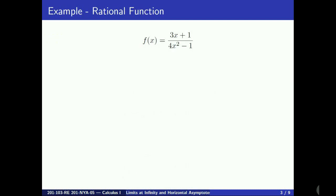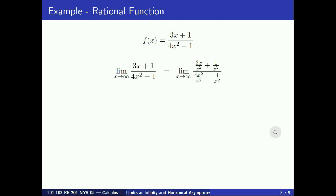As an example, take f of x equals 3x plus 1 over 4x squared minus 1. It is a rational function, that is a ratio of polynomials. As x goes to infinity, we evaluate limits of rational functions by dividing each term by the highest power found in the denominator. Here this power is x squared.